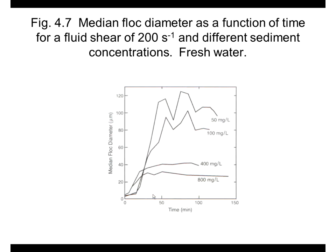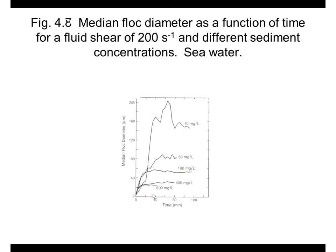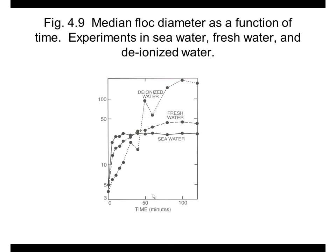We did another type of experiment where we fixed the fluid shear and changed the sediment concentration. As you increase the sediment concentration, the steady-state flock diameter decreases. The rate of aggregation is faster as you increase the concentration — for instance, at 800 mg/L you form a steady state faster, but the diameter is smaller. The form of the curves is the same S-shape as the previous figure, and as I increase the parameter, the steady-state flock size decreases.